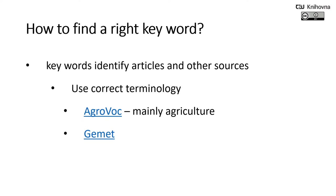How to find the right keyword. Search databases using keywords such as concepts or subject phrases that identify articles and other sources. Once you have identified a topic, selecting your keywords is pretty simple. Turning your research questions into keywords is the most important part. If you don't know what the appropriate keywords are, you can look in a thesaurus and find the right terminology for your research. You can use, for example, AgroVoc or Gemet — links for those two you can find below the video.